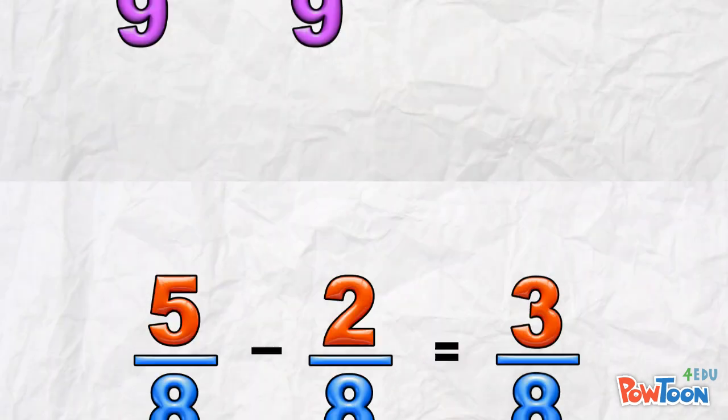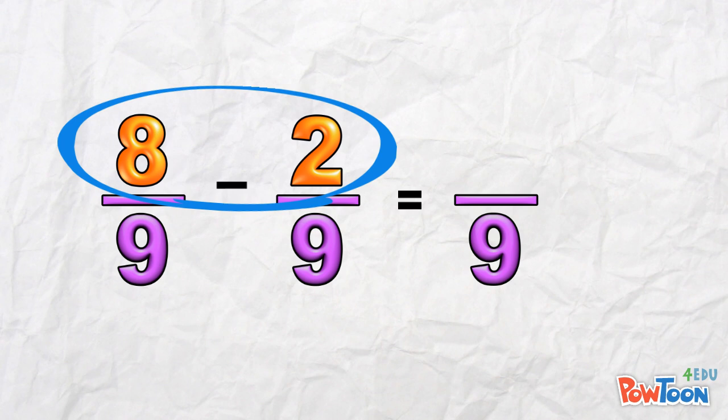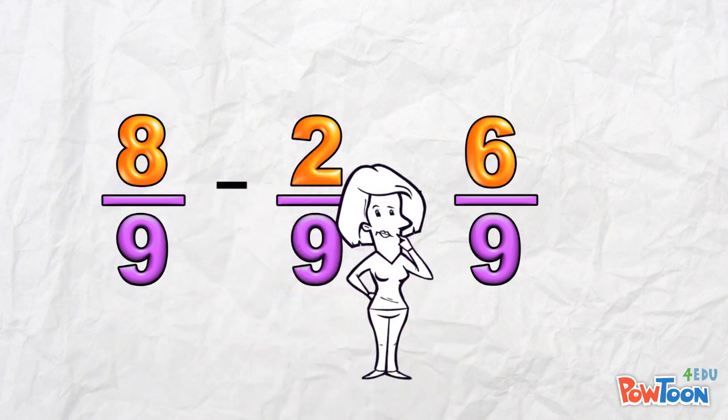What about this one? The denominator stays. And with the numerator, 8 minus 2 is 6. 6 ninths. Notice anything?